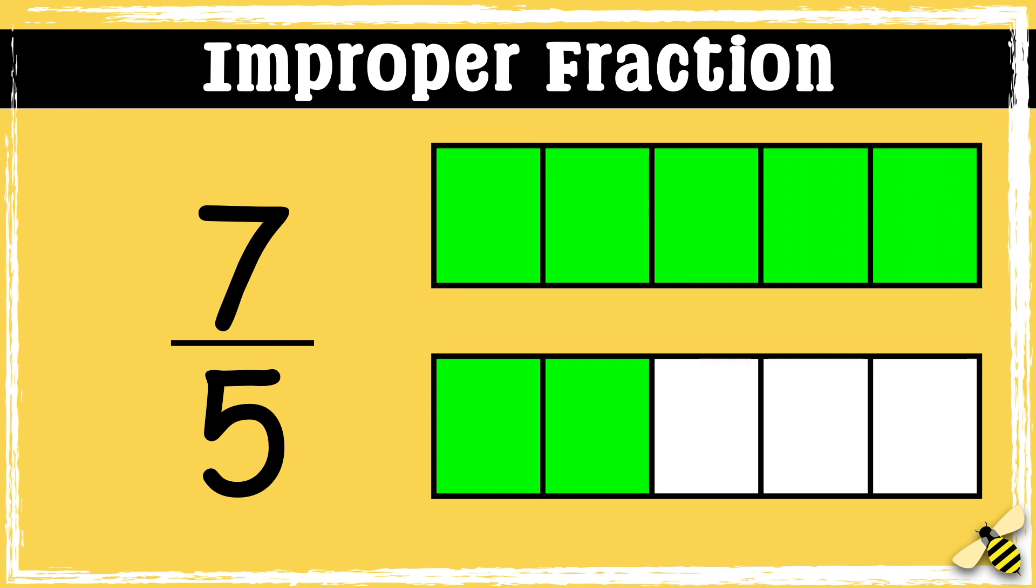Let's have a look at another example of an improper fraction. Seven-fifths. The whole is still split into five, but there are seven parts.